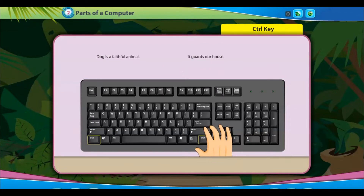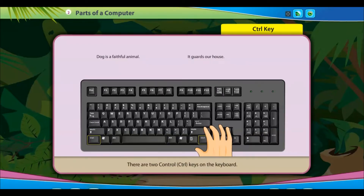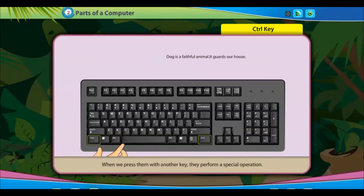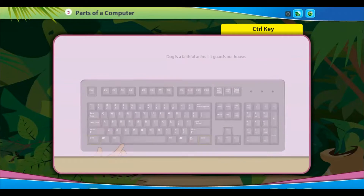There are two control keys on the keyboard. When we press them with another key, they perform a special operation.